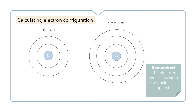We can calculate the electron configuration of an element by using its atomic number. For example, lithium has an atomic number of three, meaning it has three electrons. We start by filling from the innermost shell — the first shell holds up to two electrons, but we have three in total, so we place one extra electron in the second shell. Our electron configuration of lithium is 2,1 — the first value is the first shell and the second is the second shell.